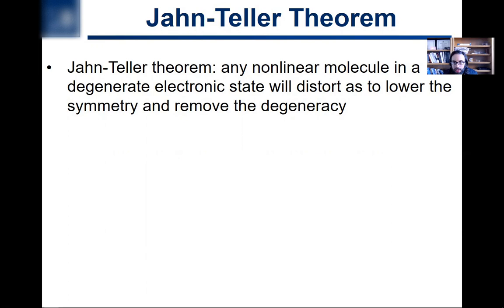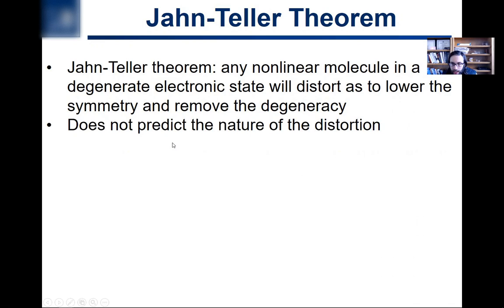In this video, we're going to talk about a structural phenomenon known as the Jahn-Teller theorem, also called Jahn-Teller distortion. What this theorem says is that any nonlinear molecule in a degenerate electronic state — meaning an electron configuration that has more than one possible configuration with the same energy — will distort so as to lower the symmetry of the molecule and thus remove the electronic degeneracy.